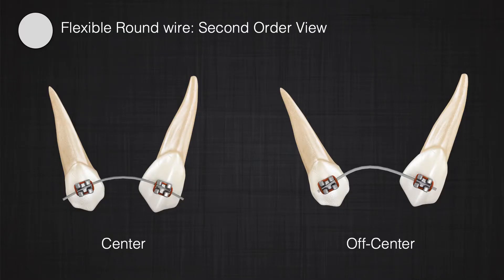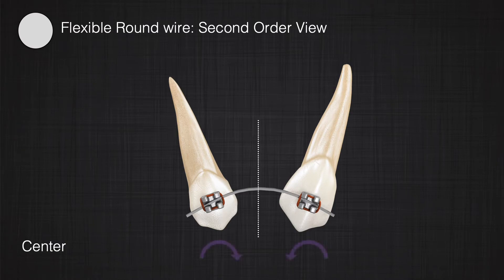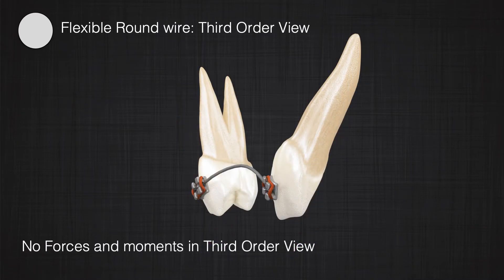What happens if our wire has a bend in the first or second order view? For simplicity, let's look at a flexible round wire that has been inserted between two brackets and achieves a bend due to the angulation of the bracket in the second order view. This bend can be in the center or off-center. If it is in the center, you remember from the two-couple system you wouldn't expect any forces in the second order view, just two moments. If you twist your system and look at it from the third order view, there are no forces and no twisting of the wire because it's round. There will be no couple or forces appearing in the third order view.